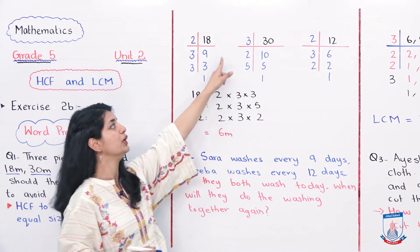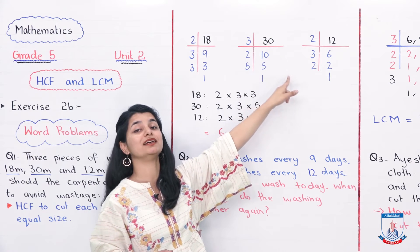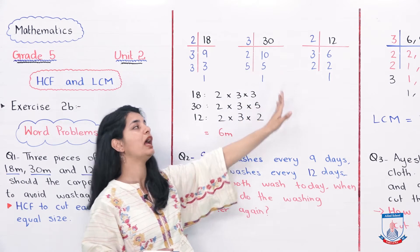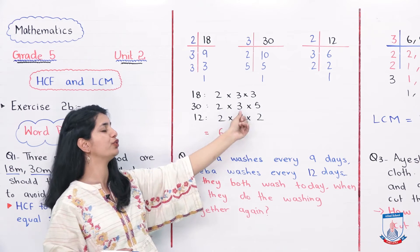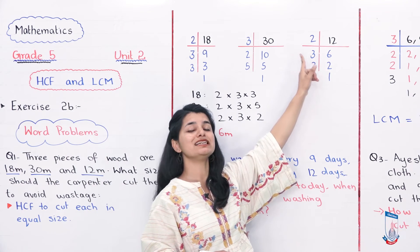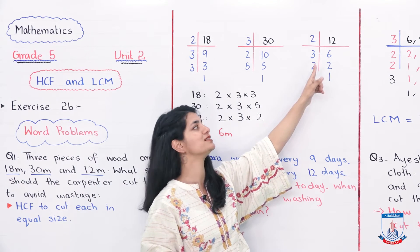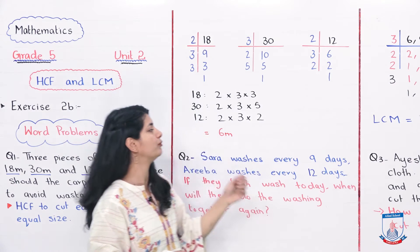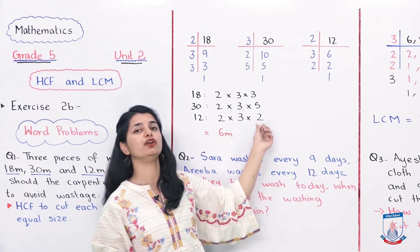Then we take 30. 3 times 10 is 30, 2 times 5 is 10, and 5 times 1 is 5. Our prime factorization is 2 × 3 × 5. Lastly, 2 times 6 is 12, 3 times 2 is 6, and 2 times 1 is 2. Prime factorization is 2 × 3 × 2.